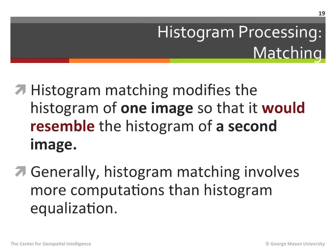The second histogram processing tool introduced in this module is histogram matching. Histogram matching modifies the histogram of one image so that it would resemble the histogram of a second image. This type of processing is particularly useful when it is necessary to combine images together, for example in an image panorama or in an image mosaic. While histogram matching can be easily performed by a modern computer, generally histogram matching involves more computations than histogram equalization.